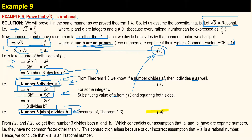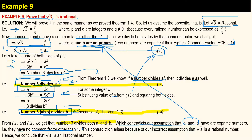So from our results, 3 divides both a and b. This is contradictory to our assumption that a and b are co-prime numbers with no common factor other than 1. This contradiction arises because of our incorrect assumption that square root of 3 is a rational number. Therefore, we conclude that square root of 3 is an irrational number.